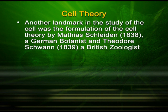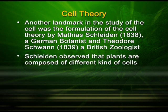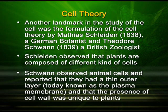Another landmark in the study of the cell was the formulation of the cell theory by Matthias Schleiden in 1838, a German botanist, and Theodor Schwann in 1839, who was a British zoologist. Schleiden observed that plants were composed of different kinds of cells. Schwann observed animal cells and reported that they had a thin outer layer, which today we know as the plasma membrane, and that the presence of the cell wall was unique to plants. He proposed that bodies of plants and animals are composed of cells and products of cells.